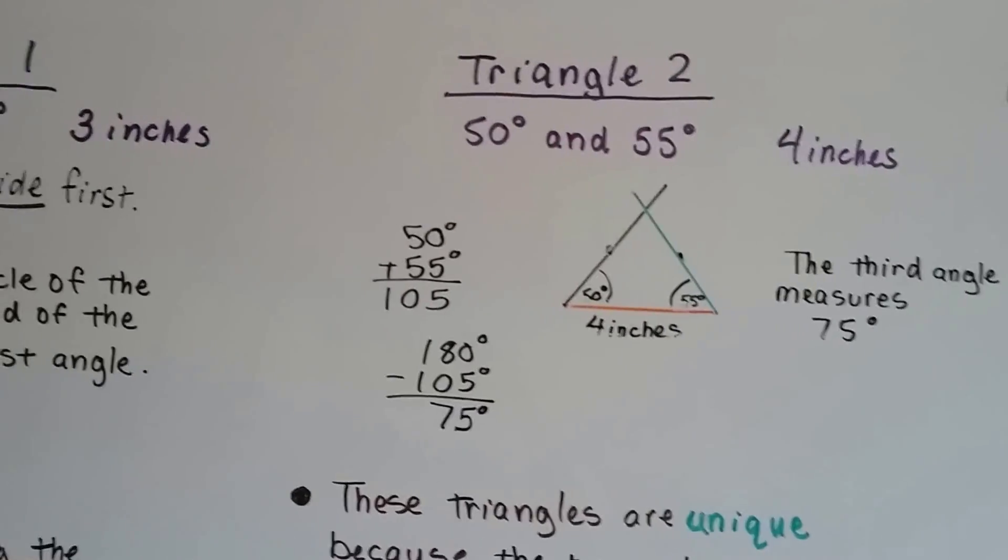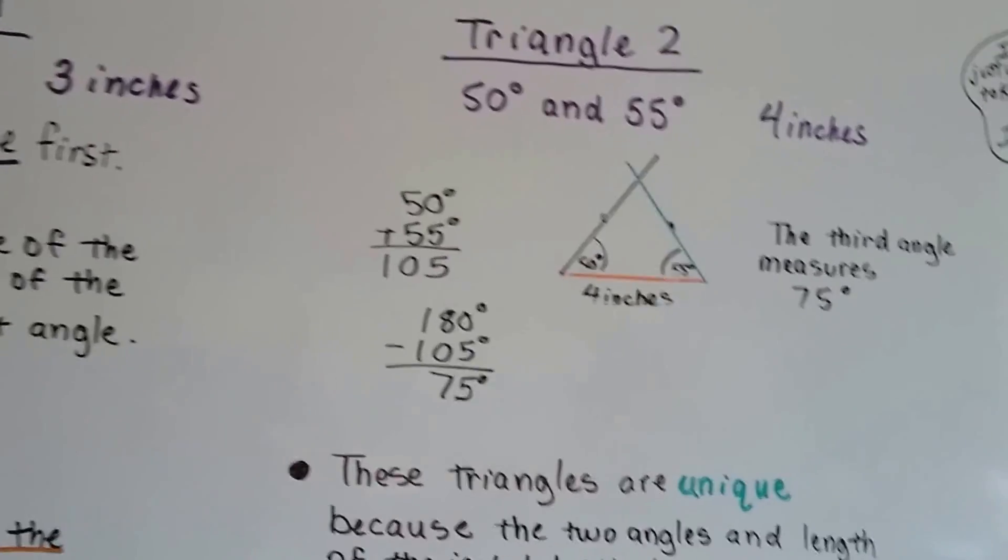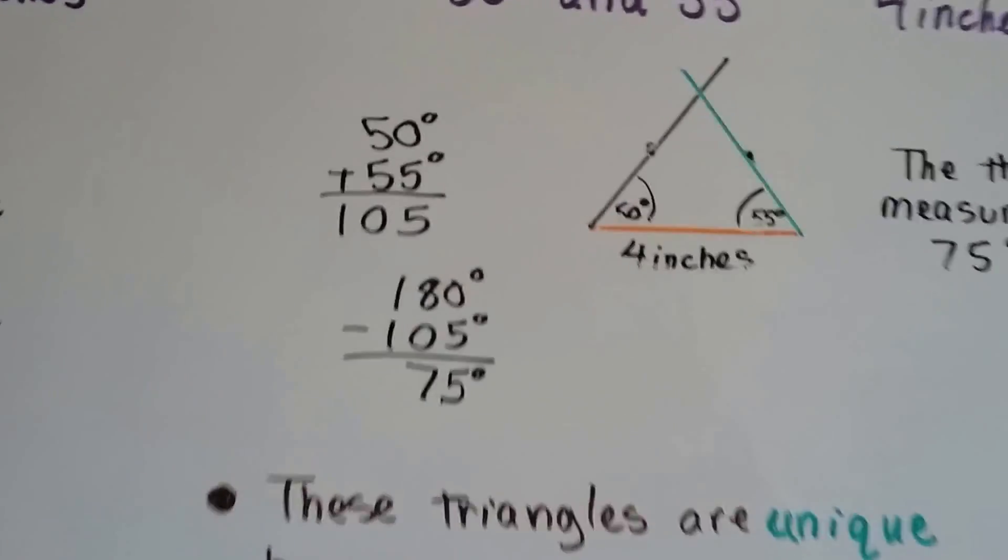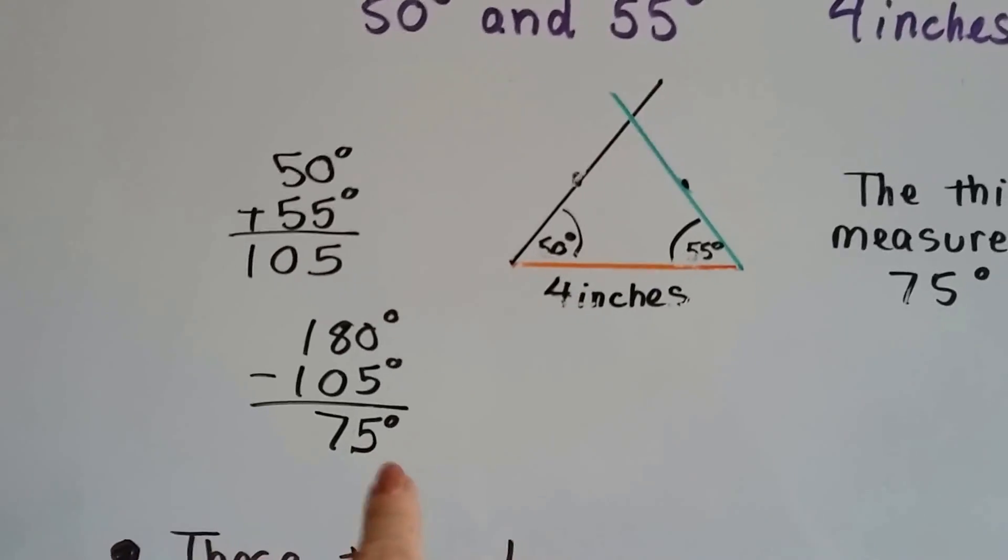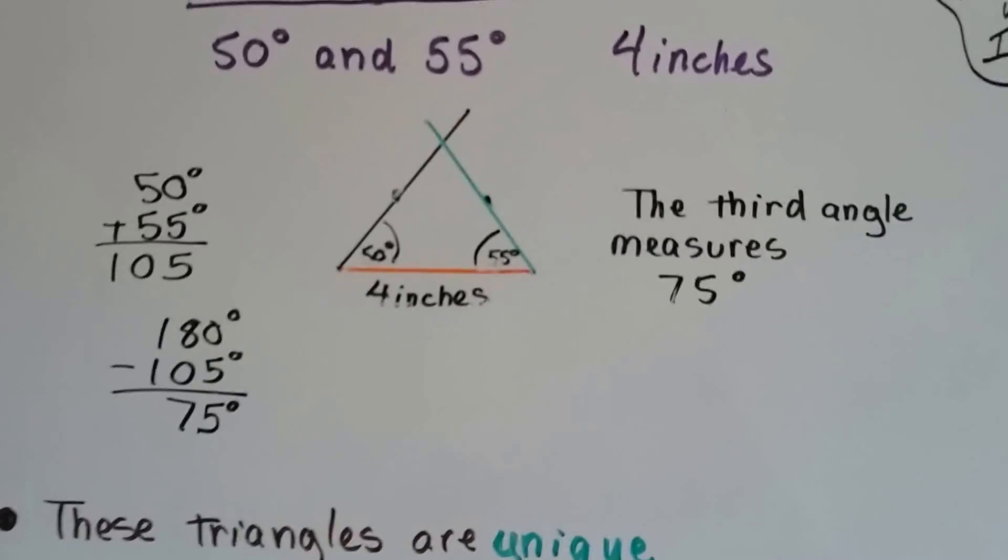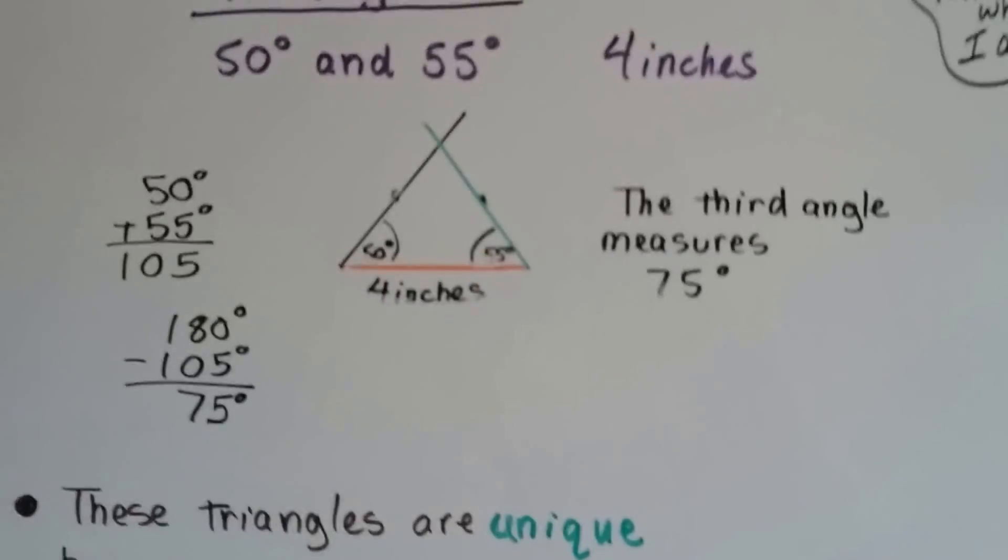And if it's 50 and 55 degrees, what's the other measure? We add them up and get 105 degrees. Take that away from the 180. This last angle must be 75 degrees. It has to be out of default because the other ones add up to 105.